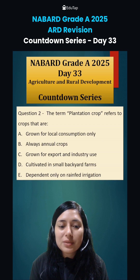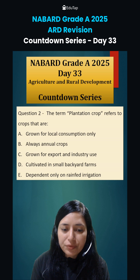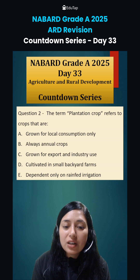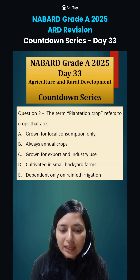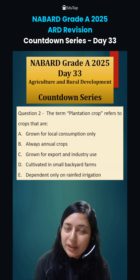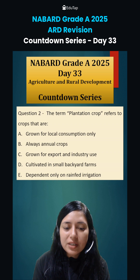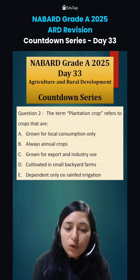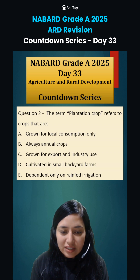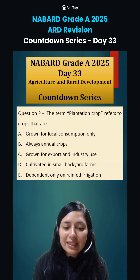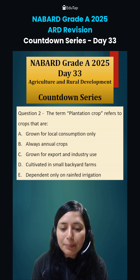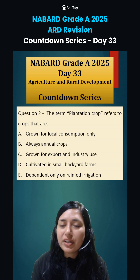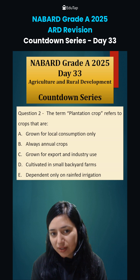Next question: the term plantation crops refers to. Your options are: grown for local consumption only; always annual crops; grown for export and industry use; cultivated in small backyard farms; or dependent only on rainfall irrigation.